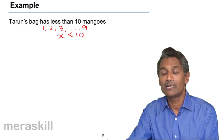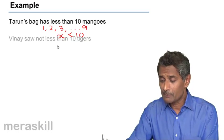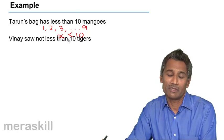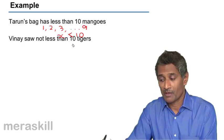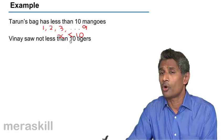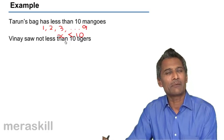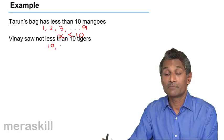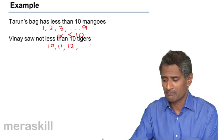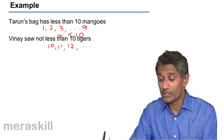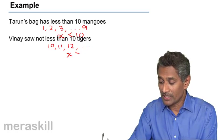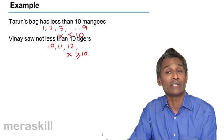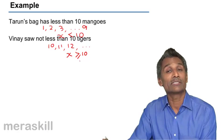The next example: someone has seen not less than 10 tigers. 'Not less than' means he could have seen 10, 11, 12, 13 — a minimum of 10 tigers. He has not seen 9 or fewer, but he could have seen 10 or more. So the number of tigers he has seen is greater than or equal to 10, introducing the concept of greater than or equal to.